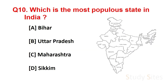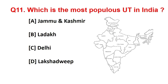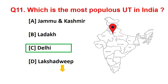Question number 10. Which is the most populous state in India? Answer is Uttar Pradesh. And friends, Sikkim is the least populous state in India. Question number 11. Which is the most populous union territory in India? Answer is Delhi. And friends, Lakshadweep is the least populous union territory in India.